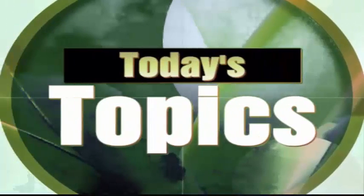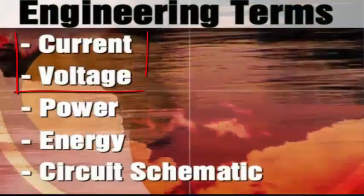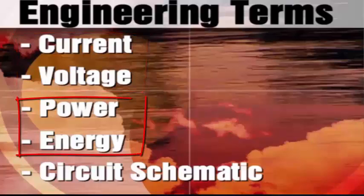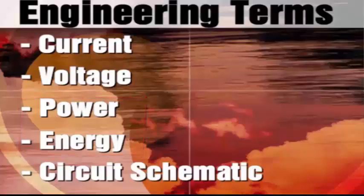Hello, Dr. J here. We're going to get started with some basics in electrical engineering. What I'll be talking about today are two important electrical engineering variables, namely voltage and current. We're also going to see how these electrical quantities are related to power and energy. Also, we'll briefly see what is meant by a schematic or circuit diagram.